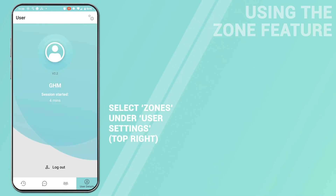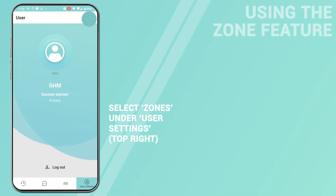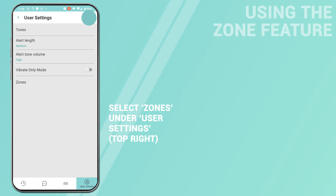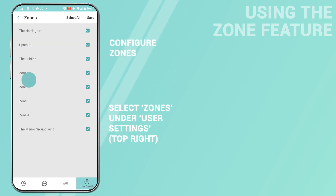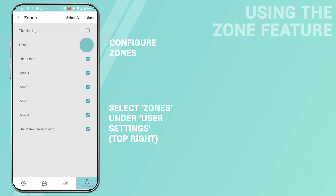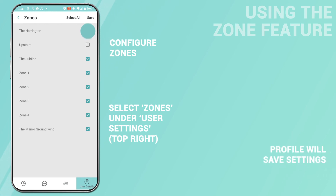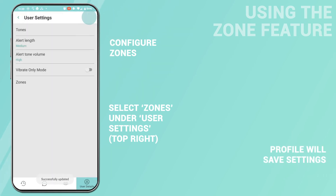Zones can be configured under Zones in User Detail Settings in the top right of the screen. Once selected, the user profile will keep the selected zone until manually changed, even when logging in from a different device.